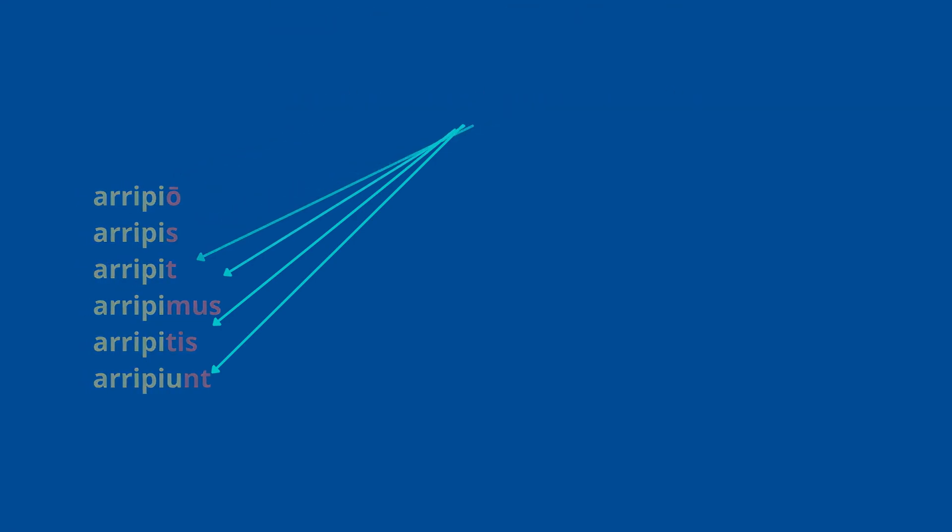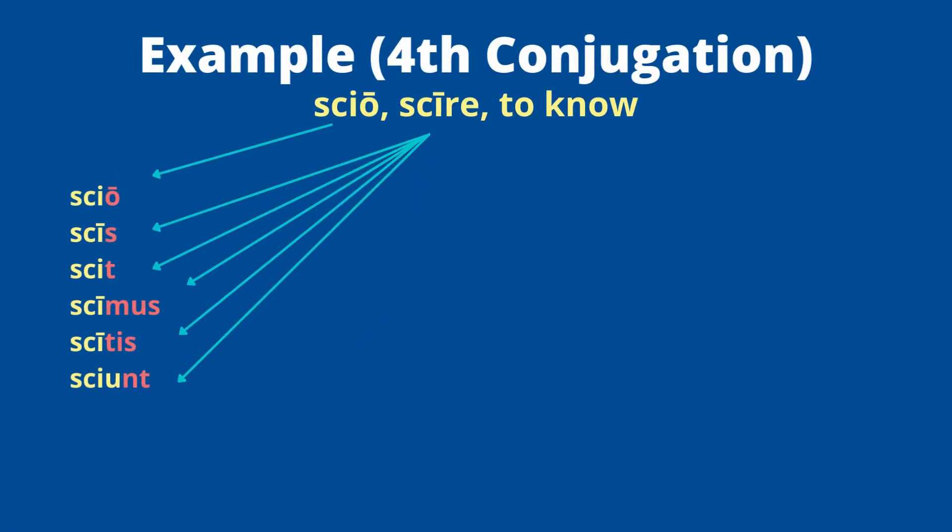Lastly, a fourth conjugation verb: 'scio, scire,' meaning 'to know.' The infinitive has '-ire,' confirming fourth conjugation. 'Scio' means 'I know.' For the rest, take 'scire,' drop '-re,' giving stem 'sci.' Add endings: scis, scit, scimus, scitis. For the third person plural, just like third -io verbs, you need '-iunt': sciunt — not 'scint.' So: scio, scis, scit, scimus, scitis, sciunt — I know, you know, he/she/it knows, we know, you all know, they know. All present tense.